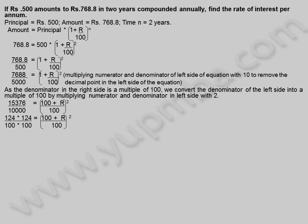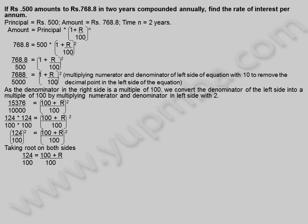124 into 124 divided by 100 into 100 is equal to 100 plus r by 100 whole square. So 124 by 100 whole square equals 100 plus r by 100 whole square. Taking root on both sides: 124 by 100 is equal to 100 plus r divided by 100. Therefore 124 is equal to 100 plus r, so rate is equal to 124 minus 100, which gives rate equal to 24 percentage.